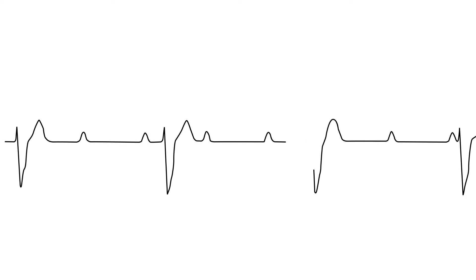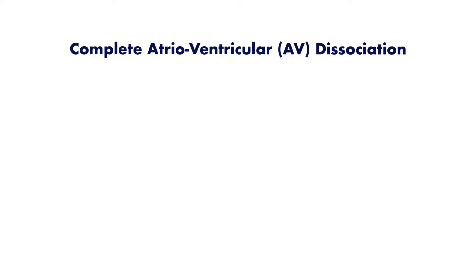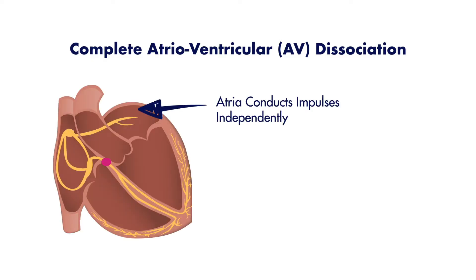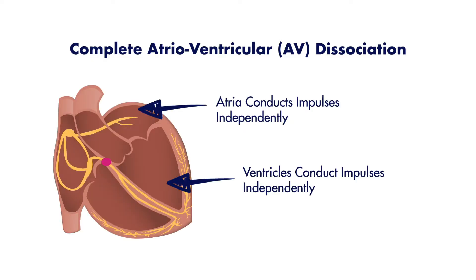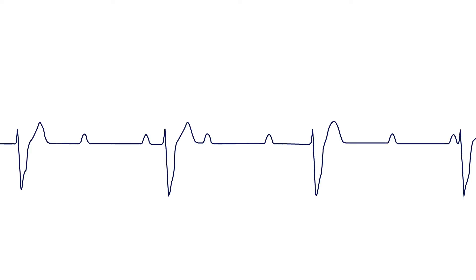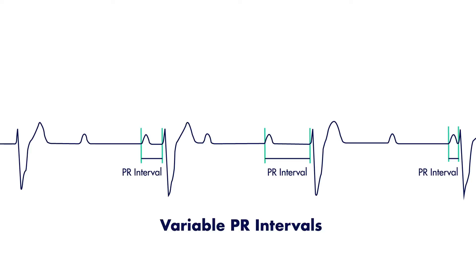3rd degree or complete AV blocks occur when there is complete failure of the AV node to conduct any action potentials from the atria to the ventricles. The pattern on an EKG is often termed a complete AV dissociation, where the atria still conduct their own impulses while the ventricles conduct impulses separately, with an electrical focus either coming from a junctional or ventricular source. On a cardiac strip, you'll see varying PR intervals suggesting this dissociation between atria and ventricles.